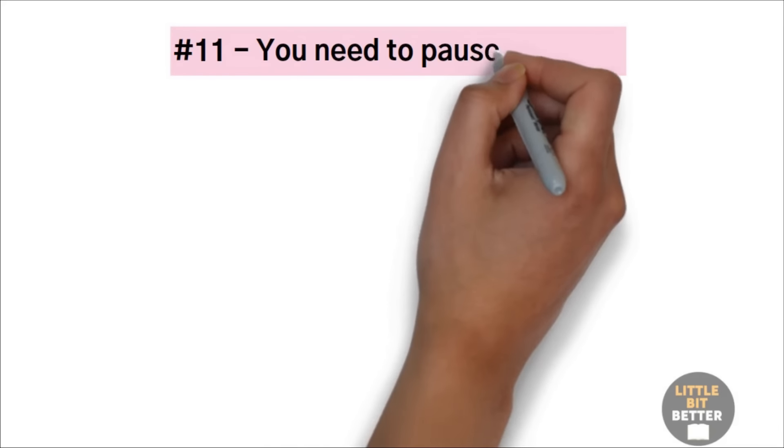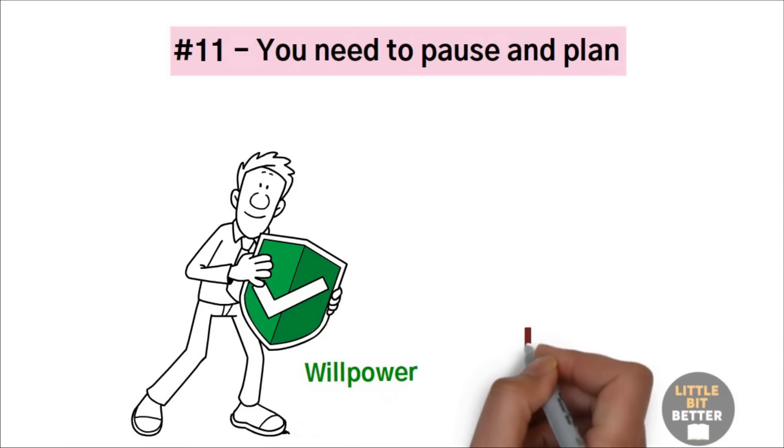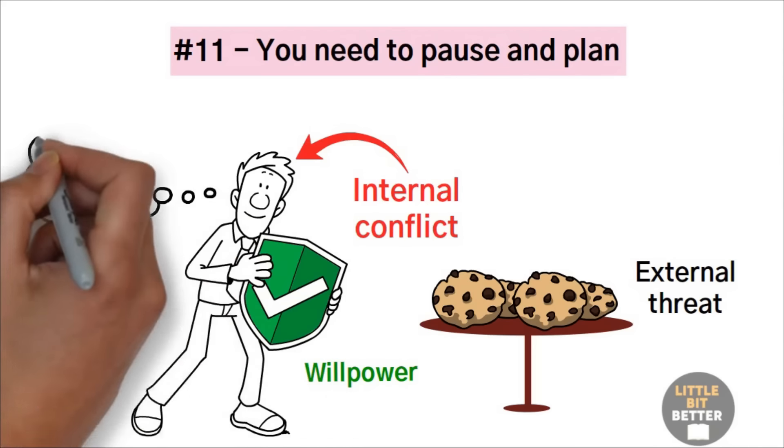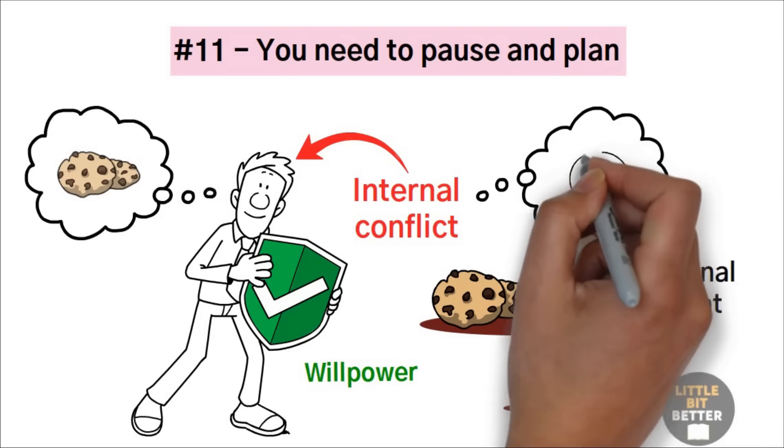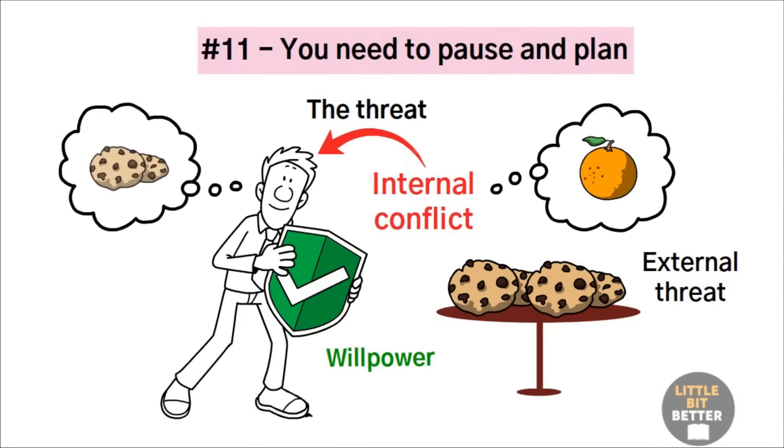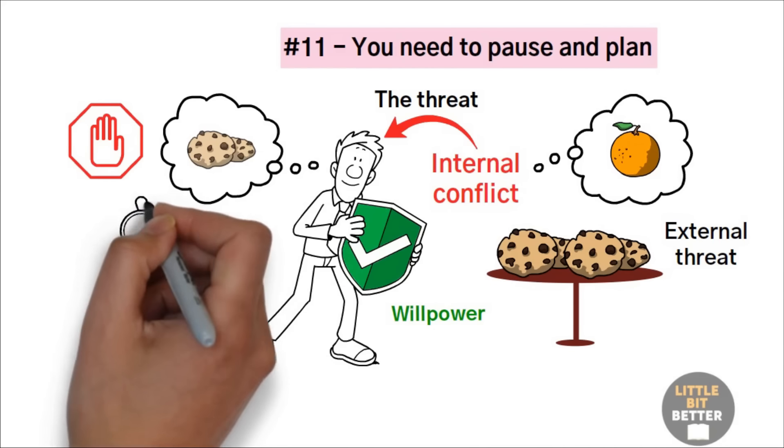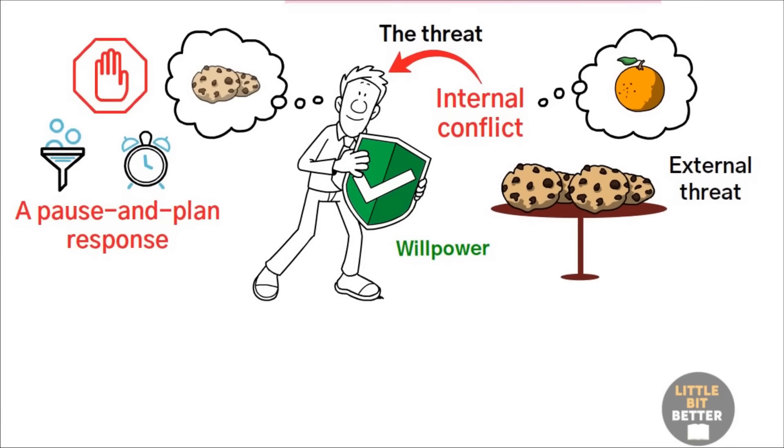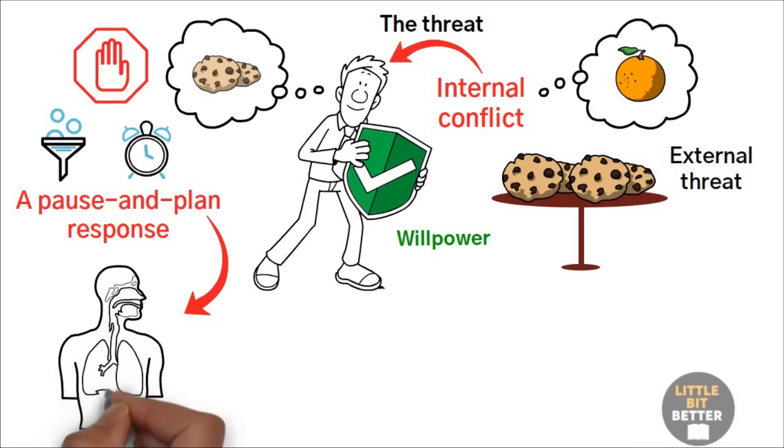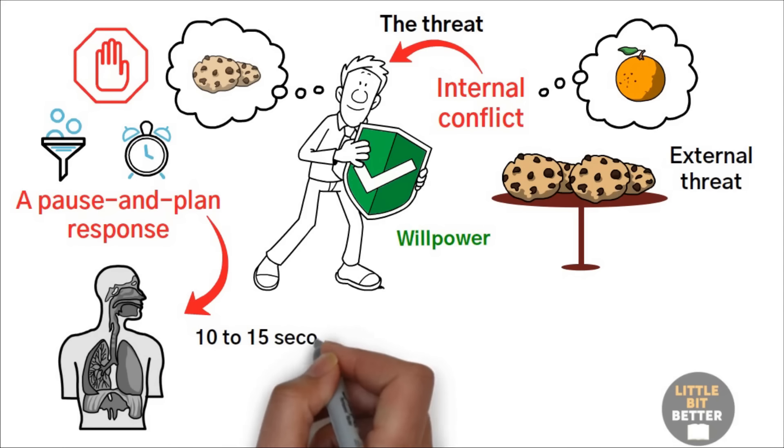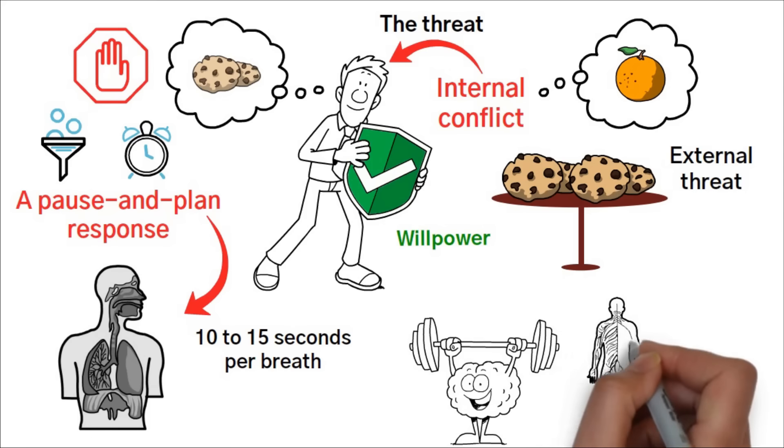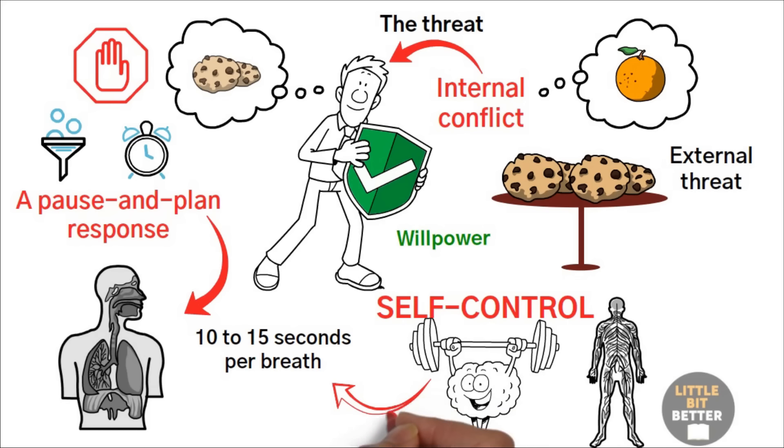Number eleven. You need to pause and plan. Whenever you have to make an important decision related to willpower, let's say when you need to resist a cookie, start by focusing on your internal conflict, not the external threat. There's something you want to do. Eat the cookie, but you know you shouldn't. You know you should be eating fruit instead. This internal conflict is the threat, and the most helpful response is to slow down so you can focus. The goal is not to paralyze you, but to give you freedom and time to decide. This is called a pause and plan response, and it's a natural response of your body. One way to activate it is to slow your breathing down to four to six breaths per minute. That's 10 to 15 seconds per breath. Not difficult with a little bit of practice and patience. This helps shift the brain and body from a state of stress to self-control mode. A few minutes of this technique will make you feel calm, in control, and capable of handling the challenge.